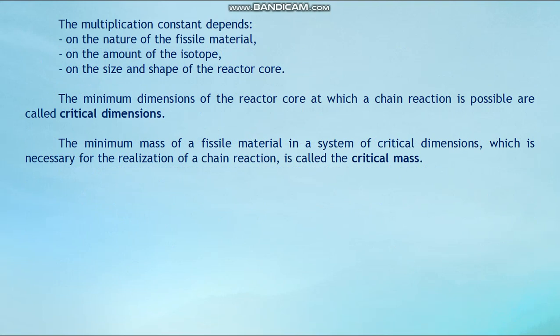The minimum dimensions of the reactor core at which a chain reaction is possible are called critical dimensions. The minimum mass of the fission material in the system of critical dimensions which is necessary for the realization of a chain reaction is called the critical mass.